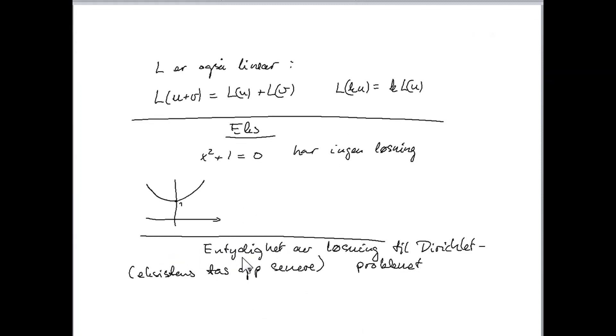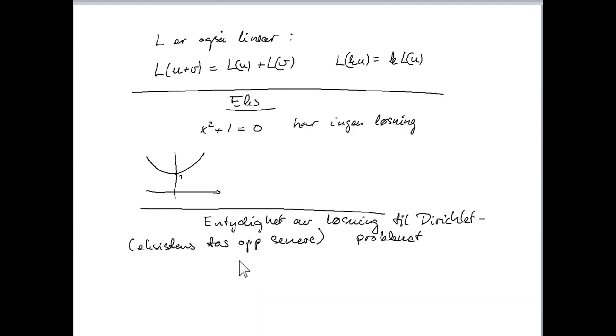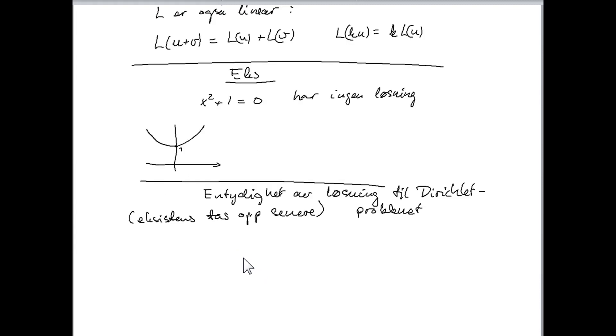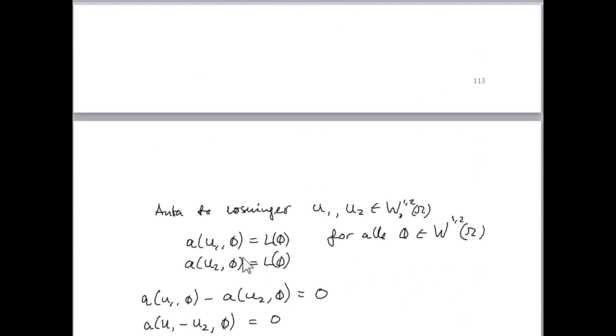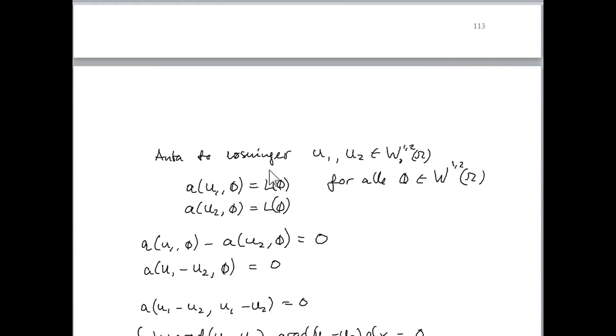So this problem has no solution in the space of real numbers. The Dirichlet problem has a solution. The existence of this solution is going to... We are going to focus on it later on by using the Lax-Milgram Lemma. But let us just show that the solution is unique. And in order to prove this, we just assume that we have two solutions, u_1 and u_2.